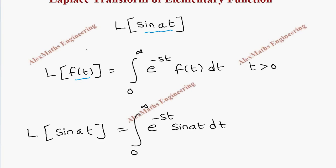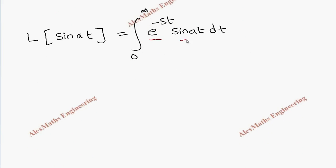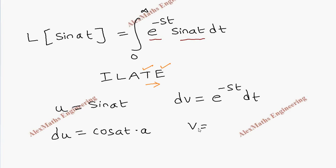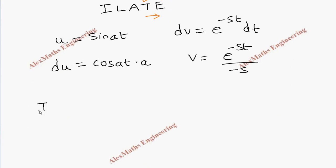Now we find the integrand is a product of two different functions, so we are going to use integration by parts. We write ILATE to identify the functions: e^(-st) is exponential and sin(at) is trigonometric. In the ILATE order, trigonometric comes first, so sin(at) is taken as u and e^(-st) dt is taken as dv. From this: du = a*cos(at) dt by the chain rule, and integrating dv gives v = e^(-st) / (-s).